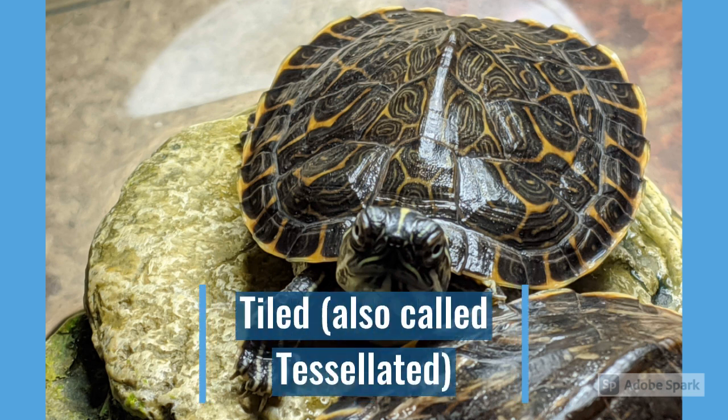Does he look familiar? That's one of the yellow-bellied sliders from the steam lab. His shell is tiled or tessellated. That means it looks kind of like the tiles on a bathroom floor, and that's another common pattern that you might find in nature.